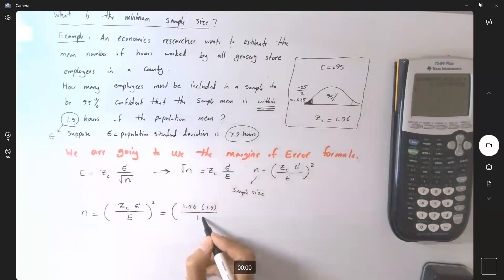So margin of error is 1.5. Compute this quantity and raise it to the second power. It gives us about 106.56, which means if we round this up we get 107 grocery store employees.